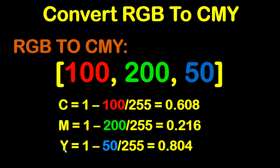Now to be able to get the yellow component, this will be equal to 1 minus the blue component, which is 50 in this case, divided by 255. This will give you 0.804.